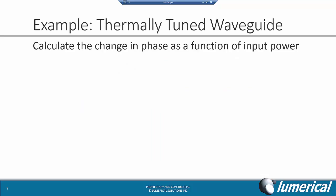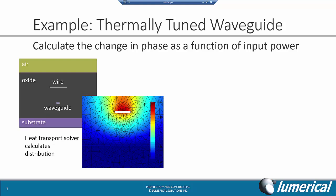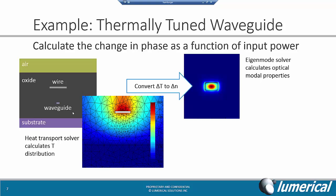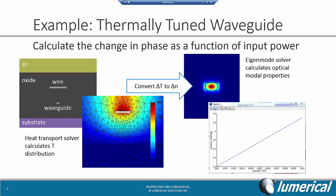This is an example of a thermally tuned waveguide. In this case, we want to start by calculating the temperature distribution in the heat transport solver. We can see the temperature distribution here, where a wire is used to heat up the waveguide. We can convert this temperature map into a perturbation to the optical refractive index. Then we can calculate the optical response using MODE Solutions Eigenmode solver. Here we have the result, which is a change in the phase as a function of input power. We can see that, for this waveguide, we get about a pi phase shift at 28 milliwatts.